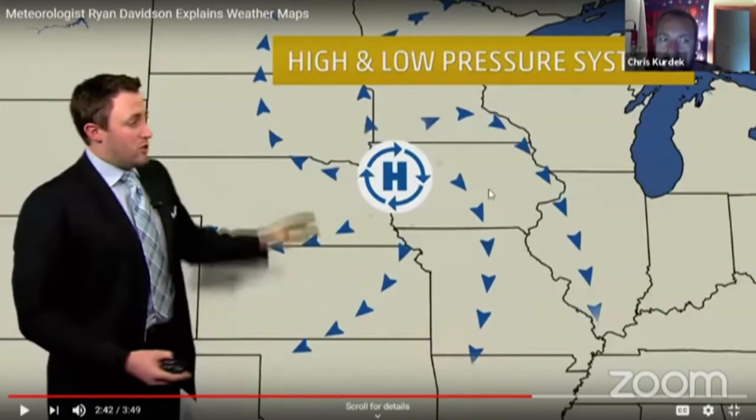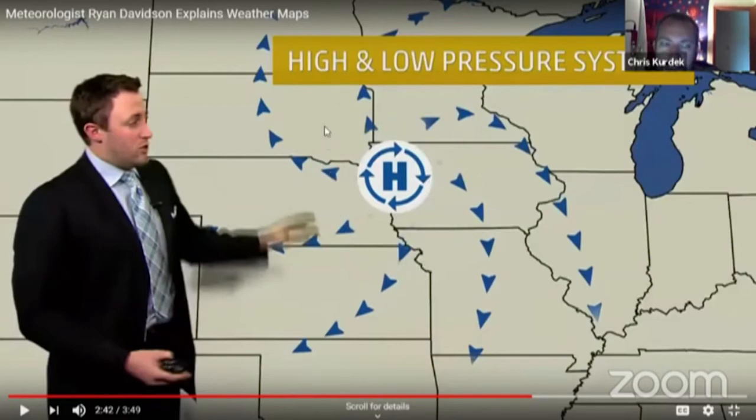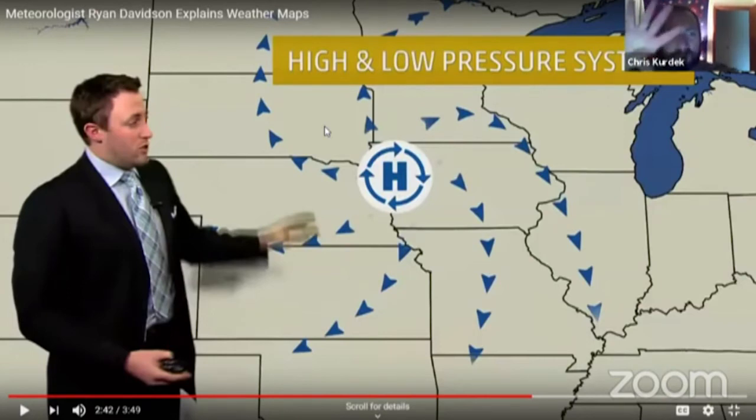In New England, as high pressure approaches it usually brings colder temperatures at first, but as it drifts east, warmer air wraps around the northern side. So if you get three days of nice weather from a high pressure system, the first day is likely the coldest, and the warmest temperatures often come as the high is departing. High pressure is generally associated with nice weather.